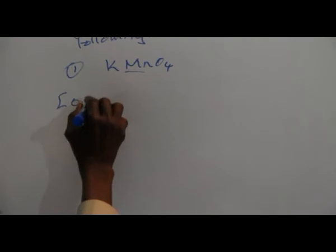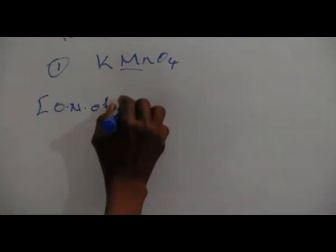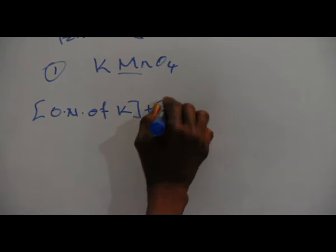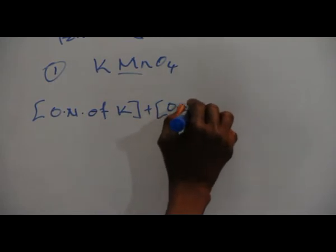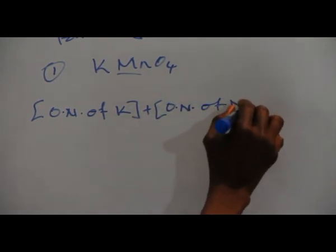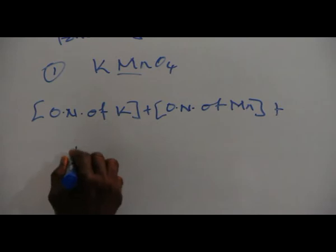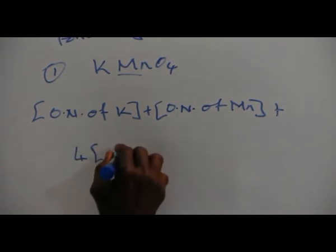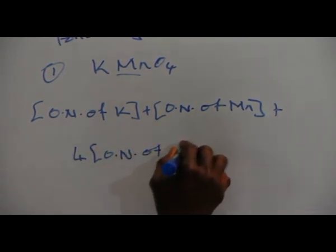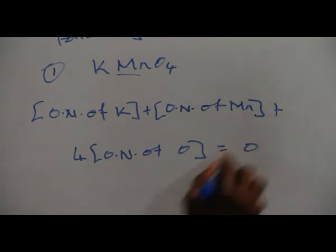Oxidation number of potassium plus oxidation number of manganese plus four times oxidation number of oxygen equals zero.